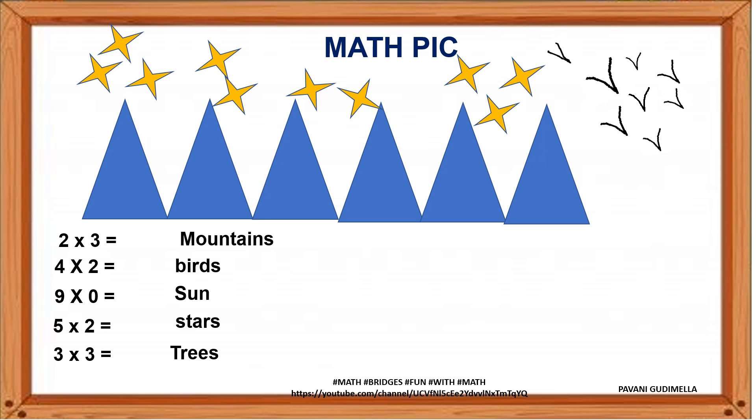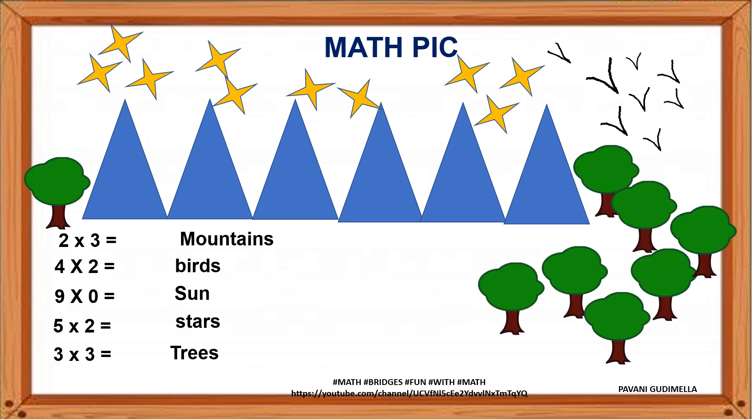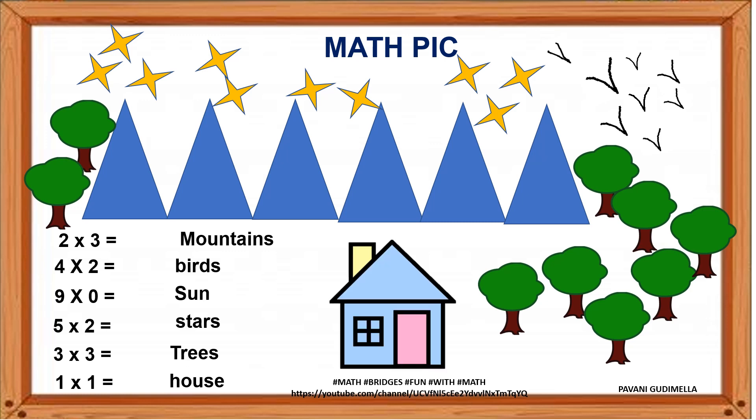3 into 3 trees. 3 threes are how much? That many trees can be drawn. As it is a village concept, we are taking mountains, trees, birds. 1 into 1 house. That many houses they should draw. It can be many more instructions based on your multiplication table. It can be a river, it can be a fish in the pond, or children playing around the house, in the garden, etc.